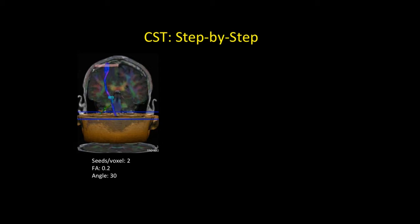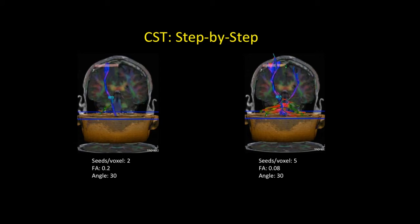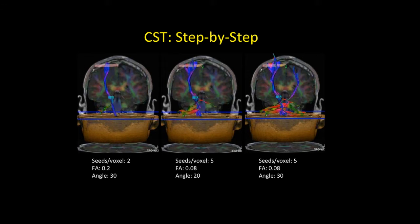Once we have a track, we should fill it out or make it more robust by altering the DTI thresholds on our software. Decreasing the FA equals more streamlines, and increasing the angle also gives us more streamlines. We don't want a single twig or too many spurious fibers, so a happy medium is our goal that should match what we know white matter dissection atlases show us.